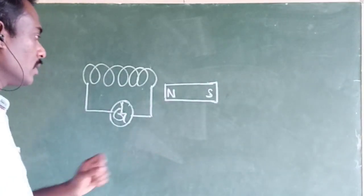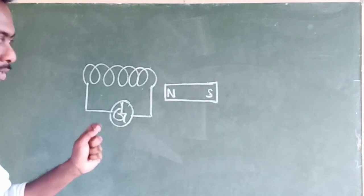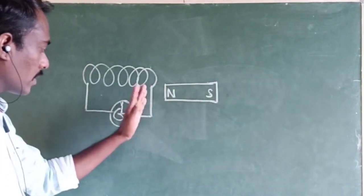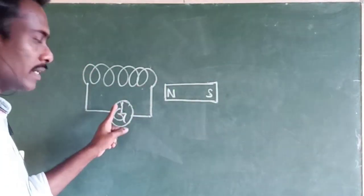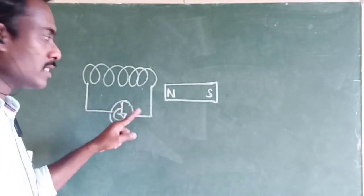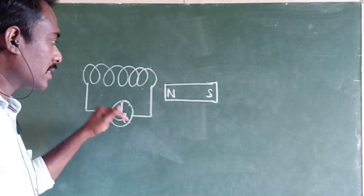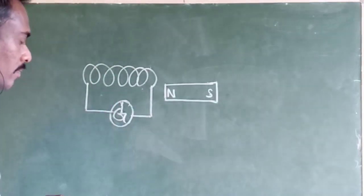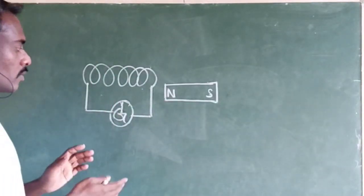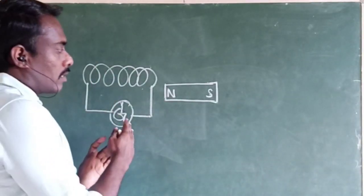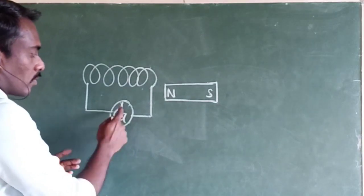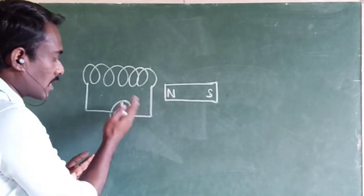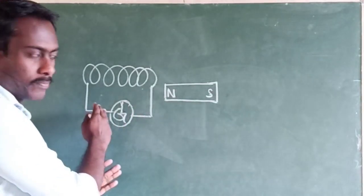When the magnet is brought nearby, suddenly a current will be detected in the circuit. There is a momentary deflection — the needle will deflect and then come back to its original position.